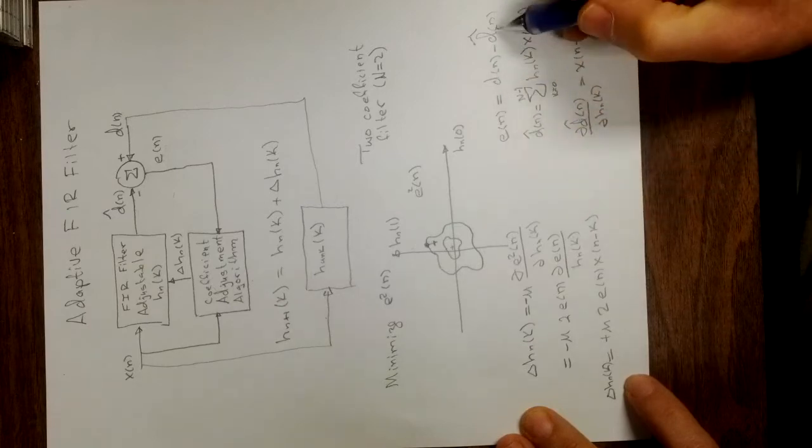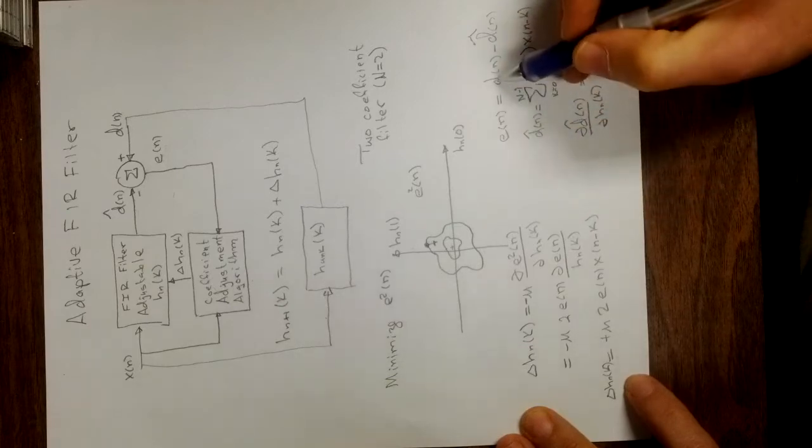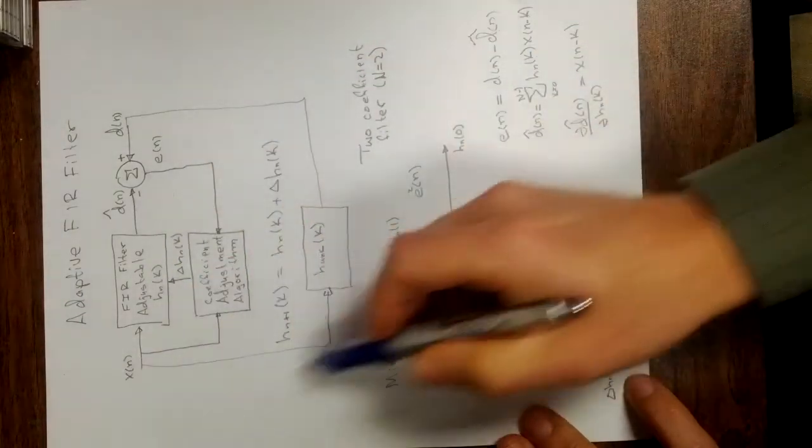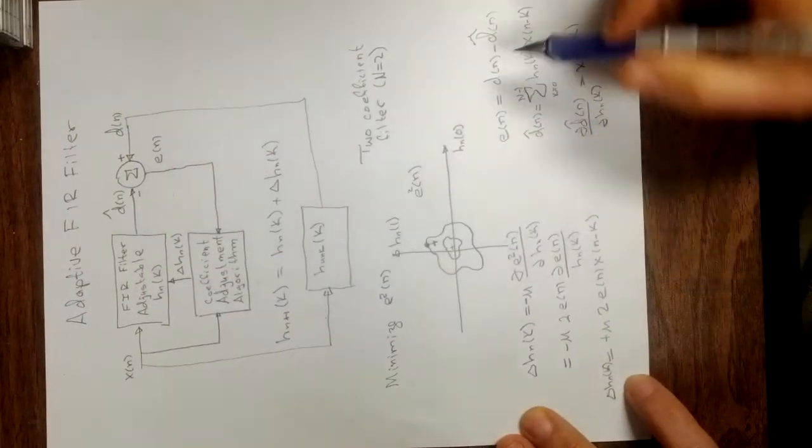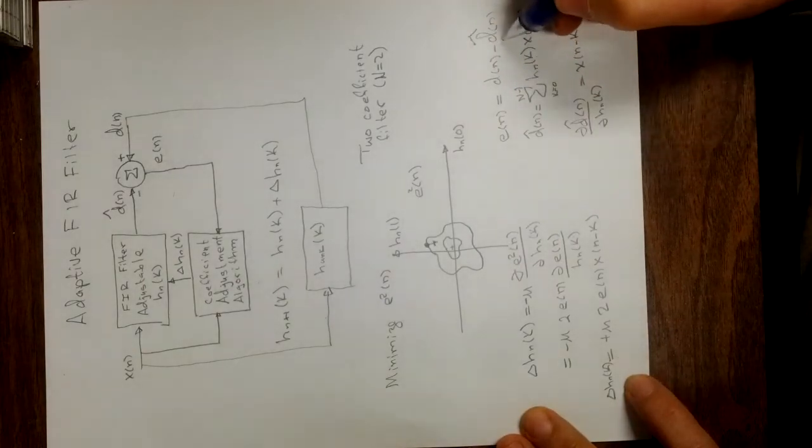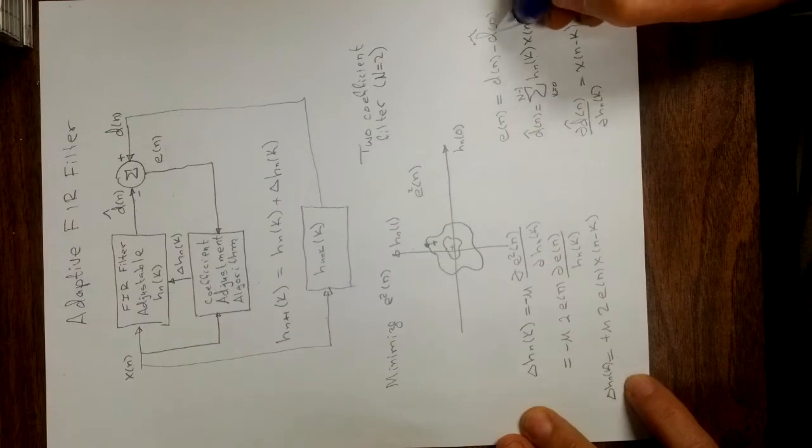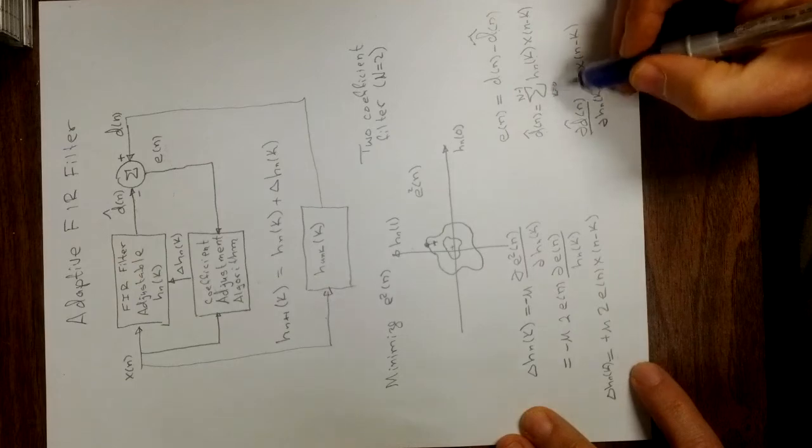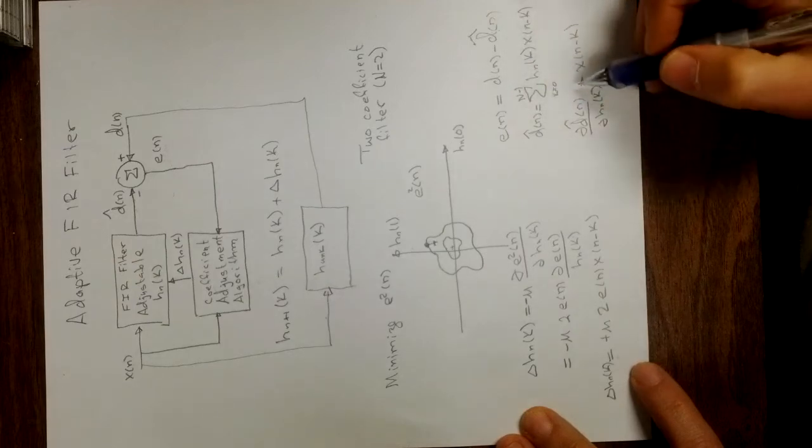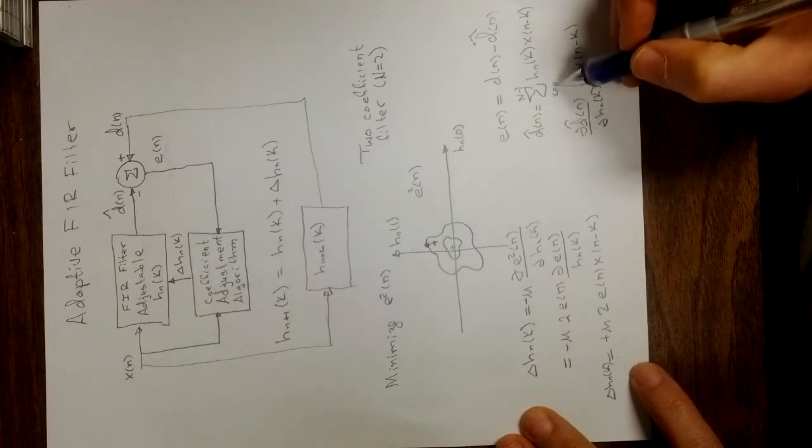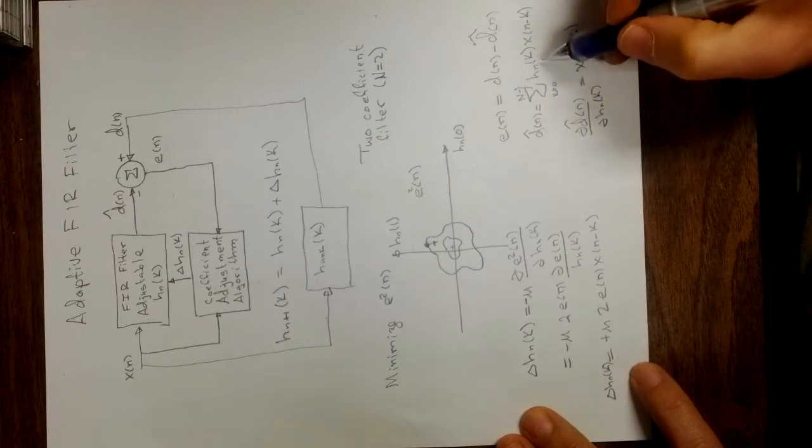Now, e is d minus d n hat. Now d here does not depend in any way on those h n of k's, it's only coming through this way, so there's no dependence there. So the derivative of d with respect to h n of k is 0. And the derivative of d hat of n would be the derivative of this guy with respect to h n of k. So let's do it with respect to, say, the 0th one. Well when you do this sum, k equals 0 to n minus 1, it goes 0 up to 1 in our case.